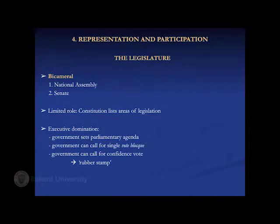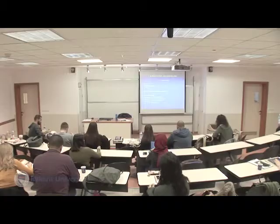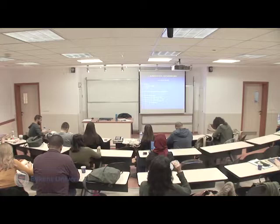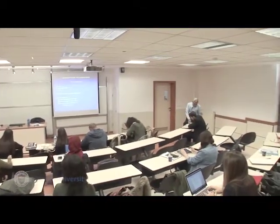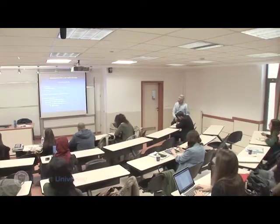The lower house is called the National Assembly — Assemblée Nationale. The upper house is named the Senate. There are over 570 members in the National Assembly, 577 in the current Assembly, and about 350 senators in the Senate.